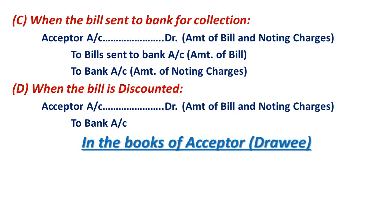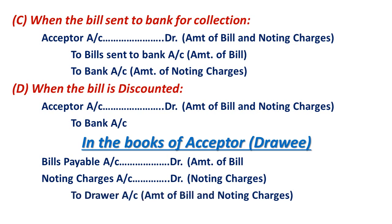In the books of the drawee, irrespective of the situation, only one entry is passed in all four situations: Bills Payable Account Dr., Noting Charges Account Dr., To Drawer Account with the amount of 10,100. Bills payable account is closed by debiting, noting charges is an expense debited, and the drawer account is opened by crediting. Once we understand these general entries, we will proceed to the problem.